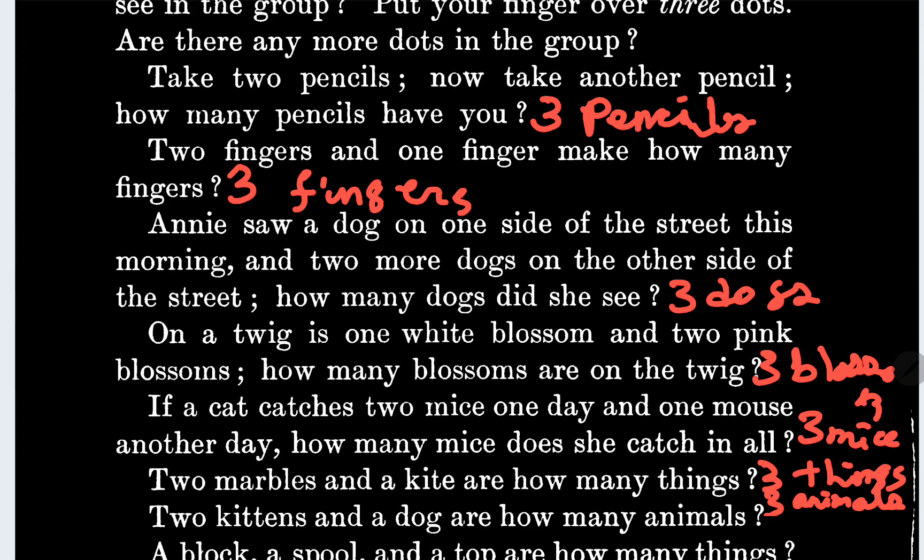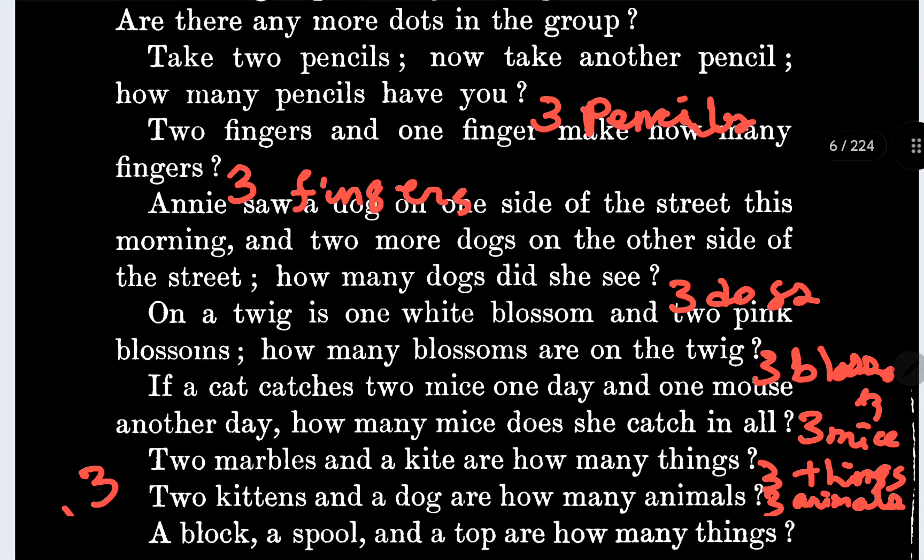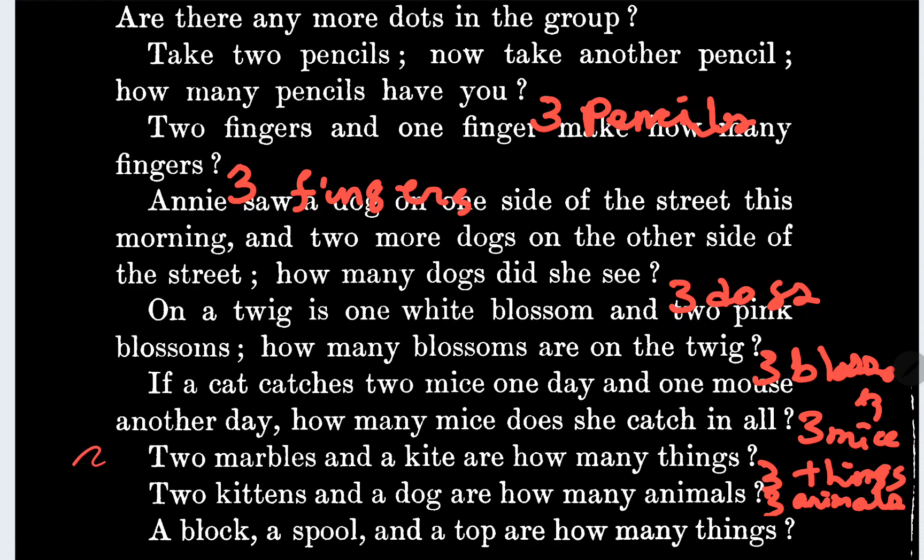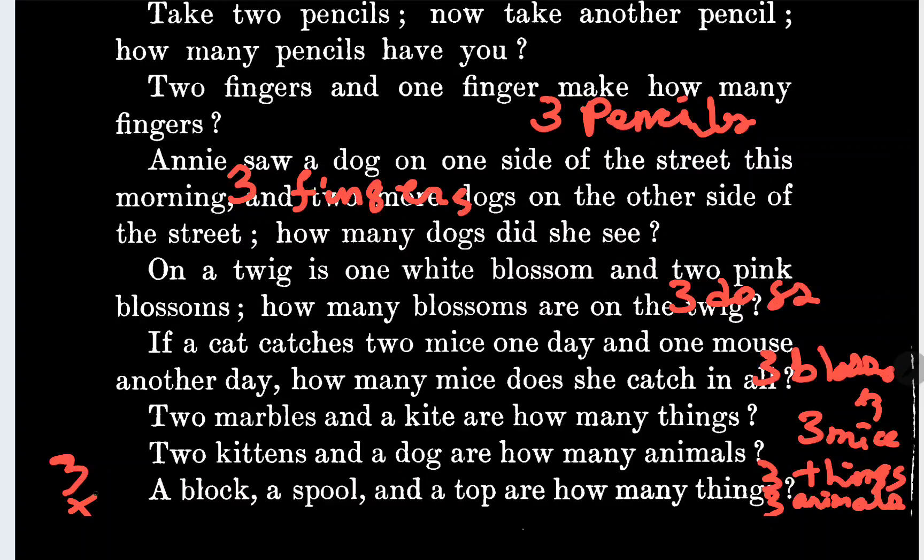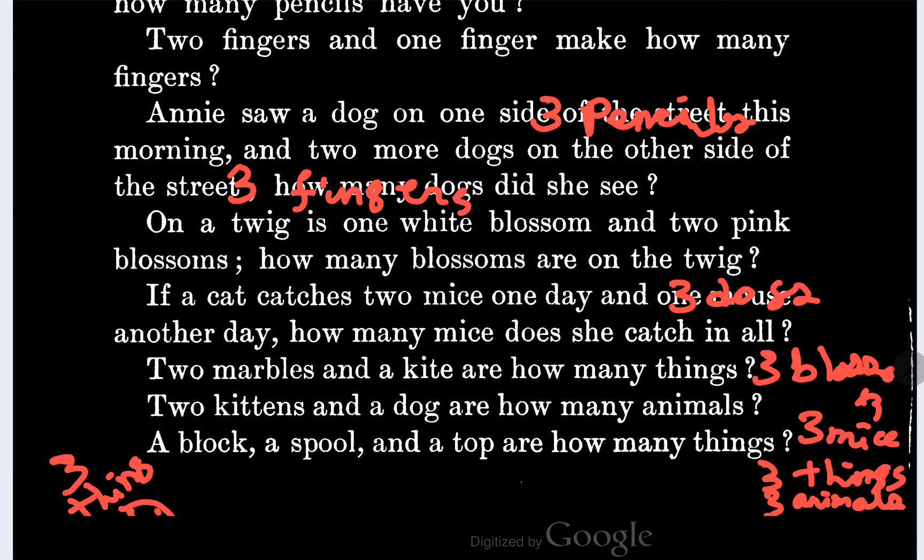A black, a spool, and a top are how many things? Three things. It doesn't want to be right. That's weird. It doesn't even let you write on the whole board. I can't even draw an arrow to where it belongs. I give up. I'm gonna write these answers quick in my book.